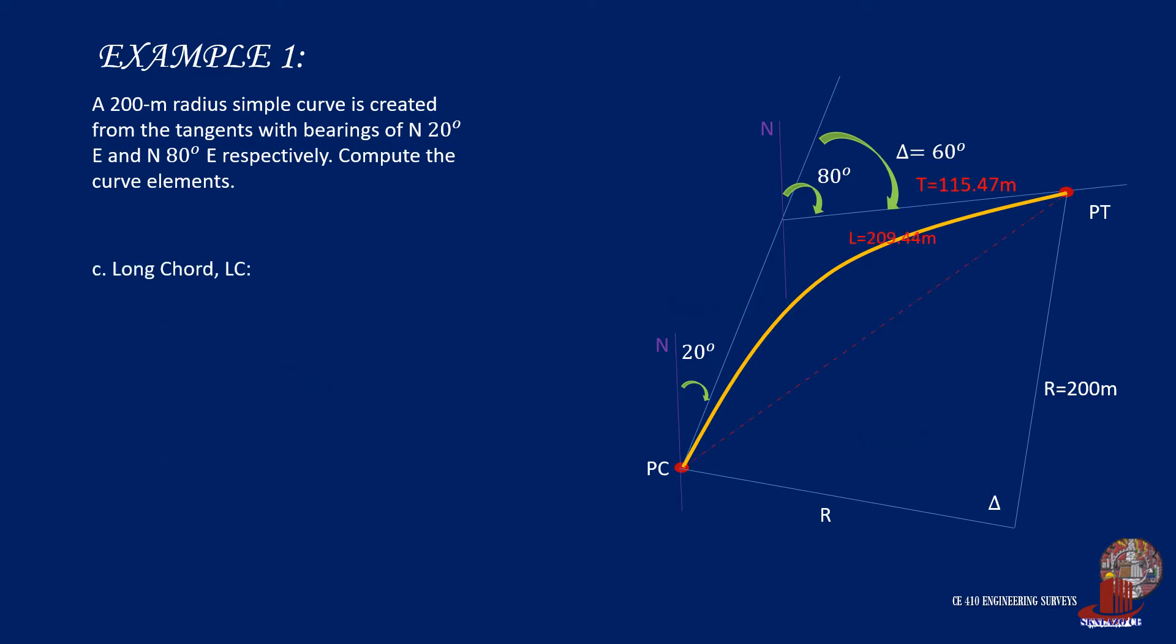We now solve for the long chord LC. The formula we are to use is LC equals 2r sine of delta over 2. By simply substituting the given values of r and delta, we get 200 meters.